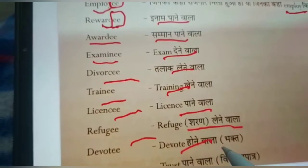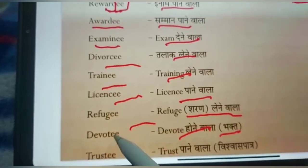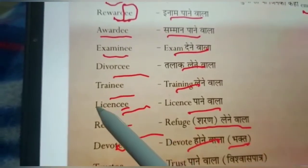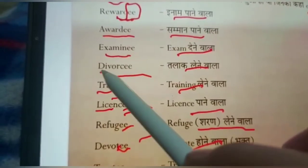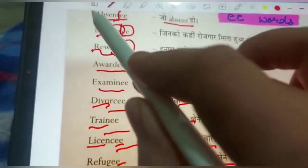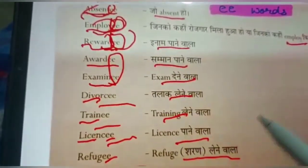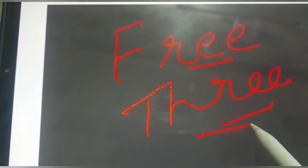Trustee — one who receives trust. So in all these words you can see that double E comes at the end. The first word is the main word. Now you might say there are other words with double E too, like 'free' and 'three', but those are complete words in themselves — they are not made from other words. In this list, the main word is separate and then double E is added at the end, so the meaning changes.